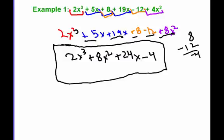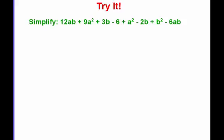So I'm going to leave you with a try it problem. And it says simplify. And you've got this long expression, 12ab plus 9a squared plus 3b minus 6 plus a squared minus 2b plus b squared minus 6ab. So you need to combine all your like terms and come up with a simplified expression. You need to do this in your notes and bring it to class tomorrow.